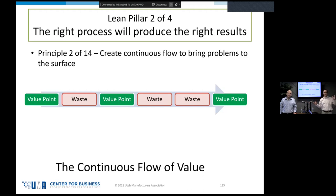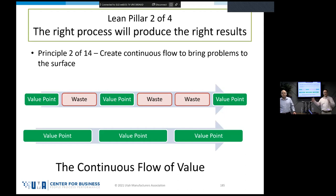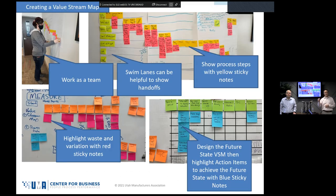The difference is: a value stream includes all the value-added points from when the process starts until it ends. So for making a phone, that's from when a customer places an order, through ordering materials, building the phone, shipping it, and delivering it to the customer — that's the end-to-end value stream. We identify all the waste and variation in our value stream and try to eliminate it so we can create better flow where nothing but value is being added all the way through the process. To create this value stream map, we've got to work as a team — we never create one in a vacuum.